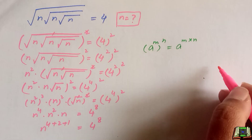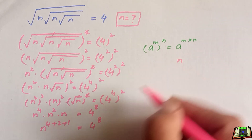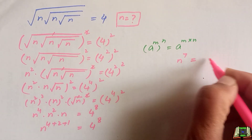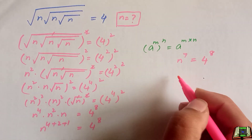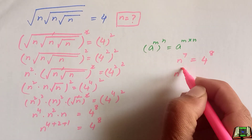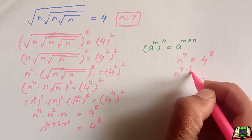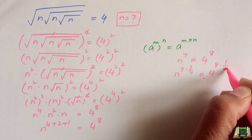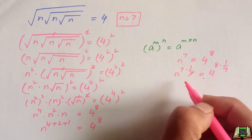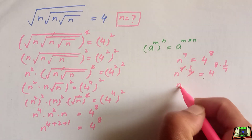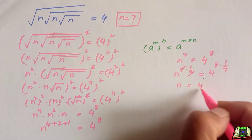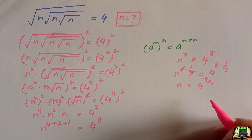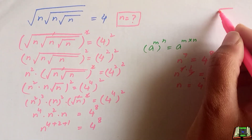To find the product of numbers with the same base, we simply add the exponents. So this is equal to n raised to the power 4 plus 2 plus 1, which equals 4 raised to the power 8. Adding the exponents: 4 plus 2 is 6, plus 1 is 7. So n raised to the power 7 is equal to 4 raised to the power 8. We multiply both sides of the equation by 1 over 7, so the 7s cancel out, and we are left with n equals 4 raised to the power 8 over 7.